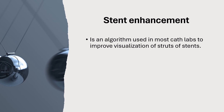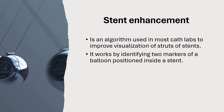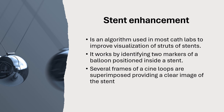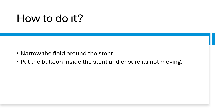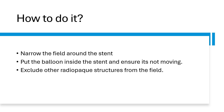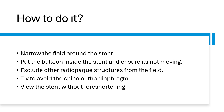So what is stent enhancement? It's an algorithm used in cath labs to improve visualization of the struts of the stent. It works by identifying two markers of the balloon positioned inside the stent. Several frames of assigned loops are superimposed, providing a clear image of the stent. To do it: narrow the field around the stent, put the balloon inside the stent and ensure it's not moving, exclude other radio-opaque structures from the field like the radio-opaque part of the wire, try to avoid the spine and the diaphragm, and view the stent without foreshortening.